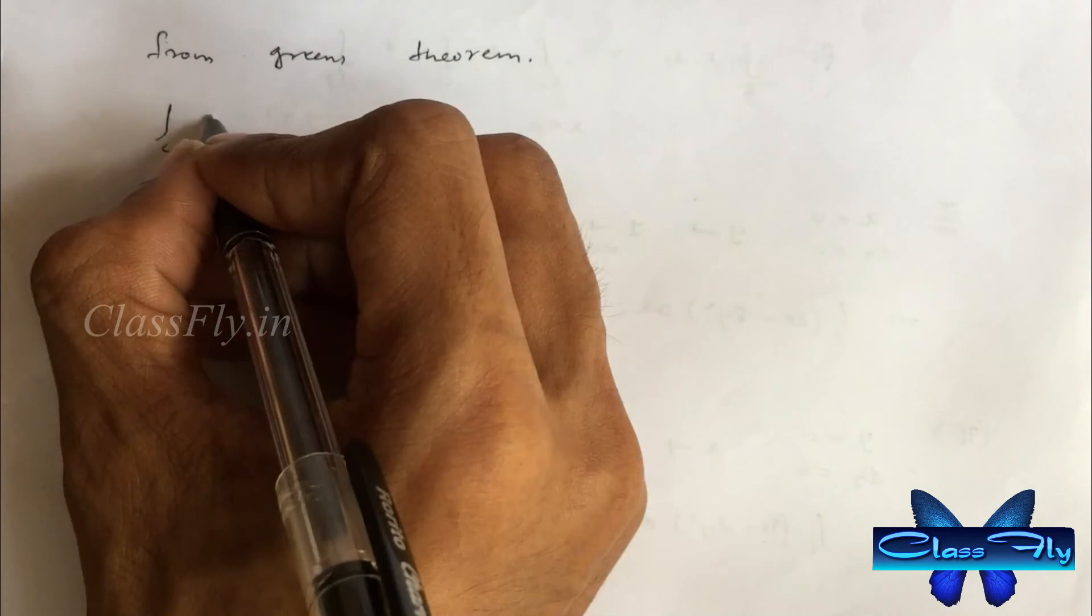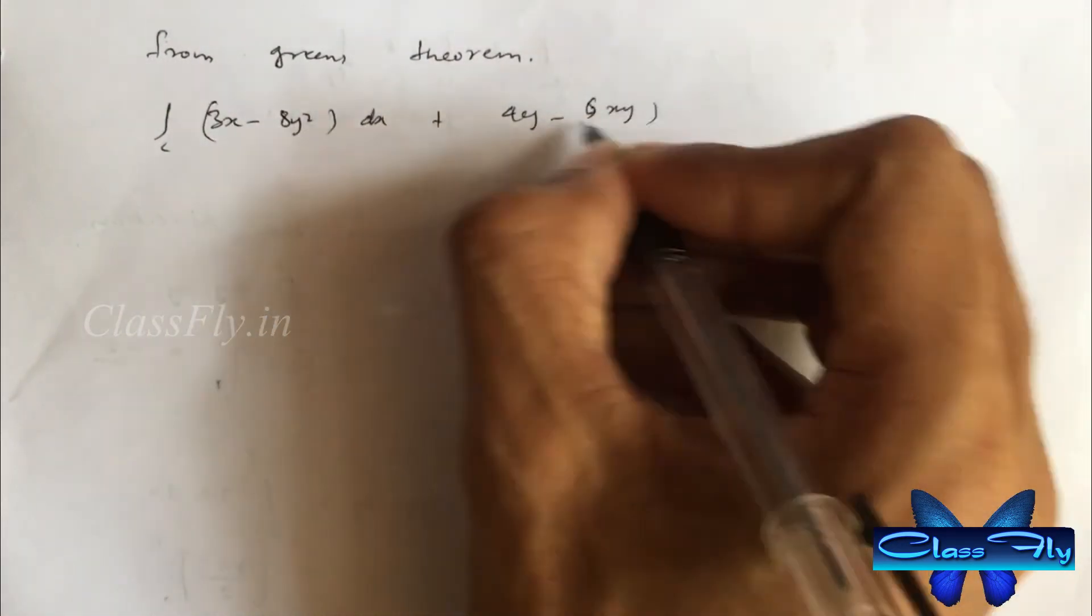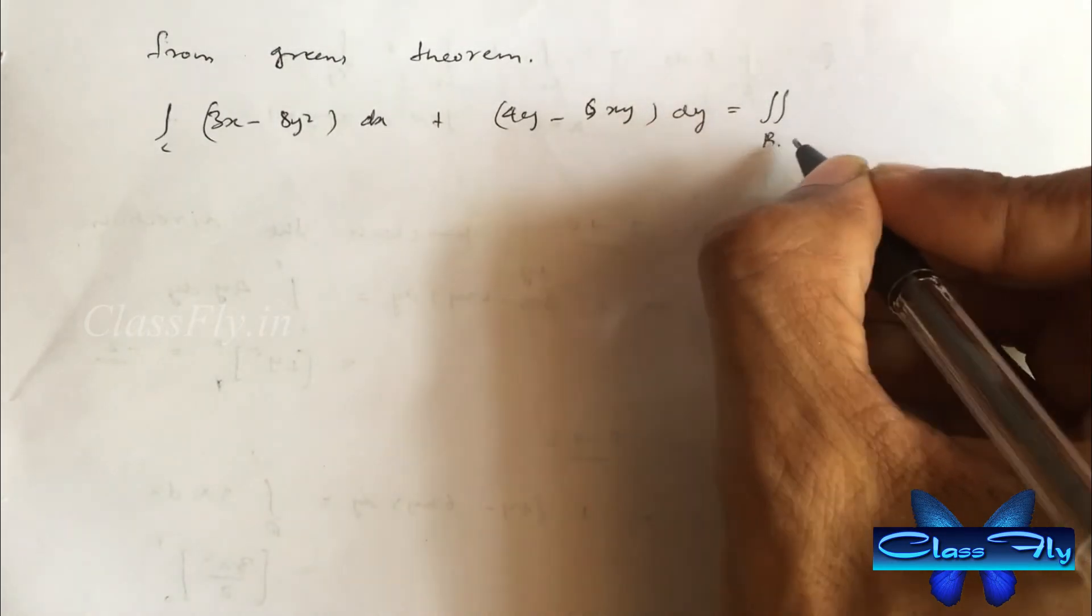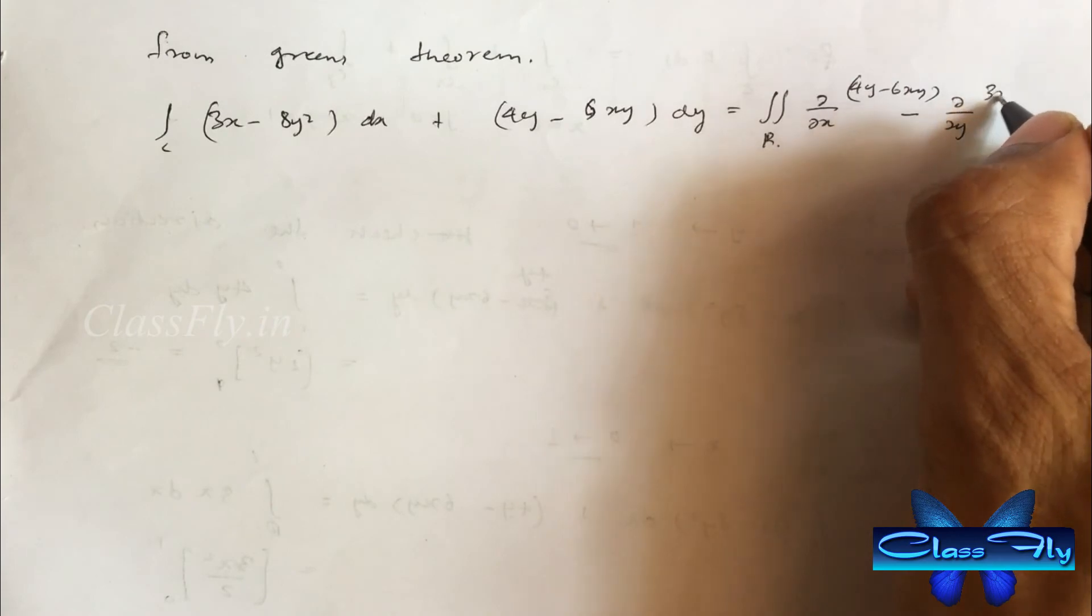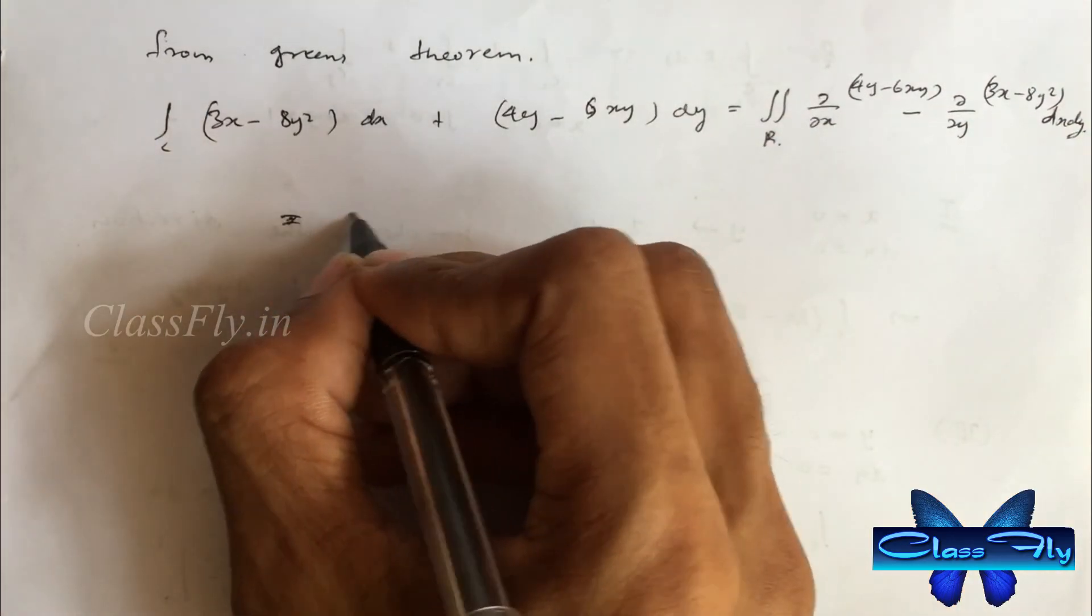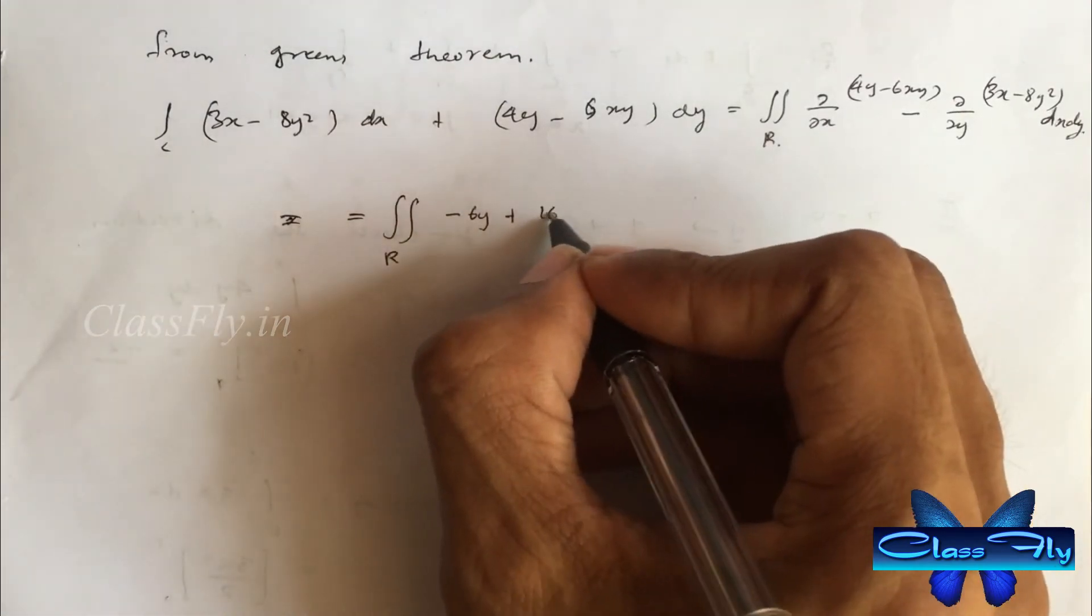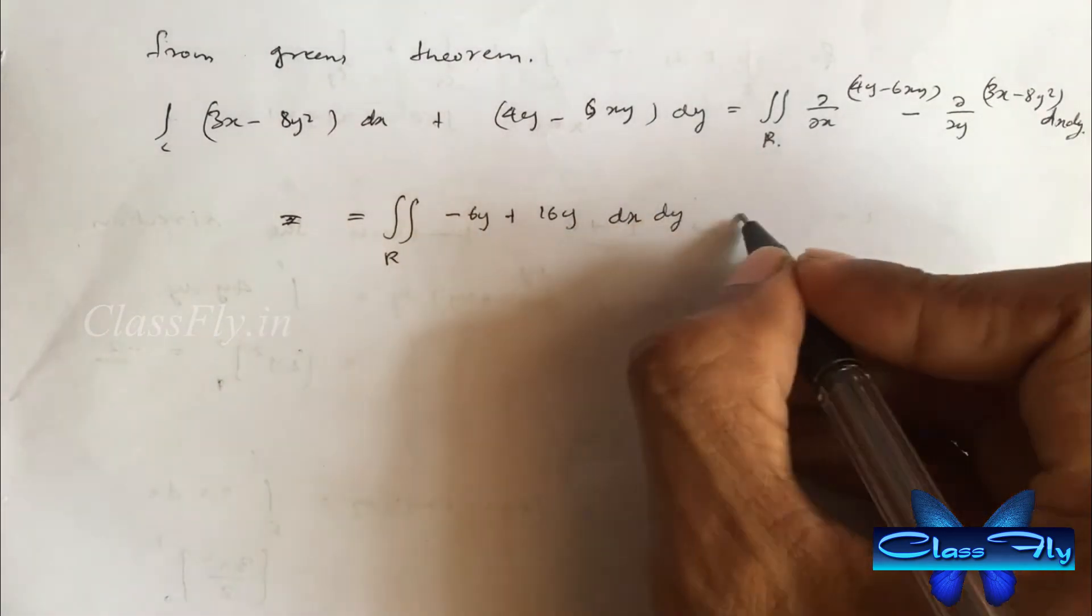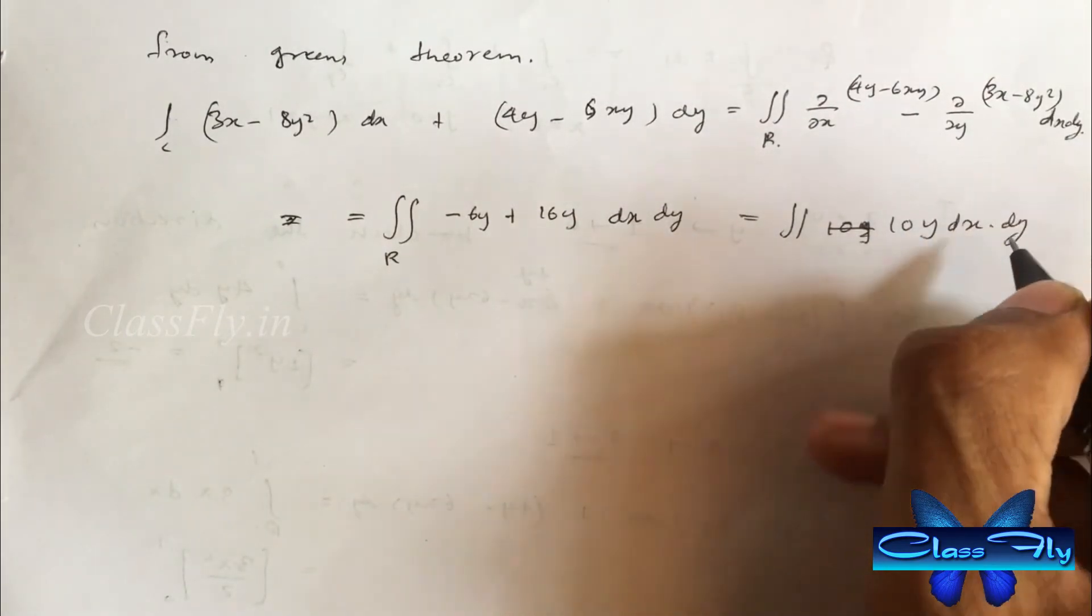And using Green's theorem, integral c 3x minus 8y square dx plus 4y minus 6xy dy is equal to double integral dou by dou x of 4y minus 6xy minus dou by dou y of 3x minus 8y square dx dy, which is equal to double integral minus 6y plus 16y dx dy, which is equal to double integral 10y dx dy.